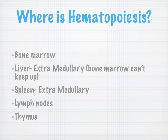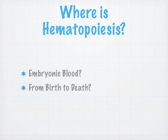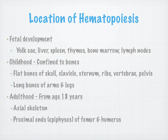So where is hematopoiesis? Hematopoiesis happens in the bone marrow, the liver, the spleen, the lymph nodes, and the thymus. The liver and the spleen are considered extramedullary hematopoiesis and come into play when the bone marrow simply can't keep up. The questions we want to ask ourselves are: in embryonic blood, where is hematopoiesis taking place versus in a human adult, and from birth to death, where is our primary source of hematopoiesis?